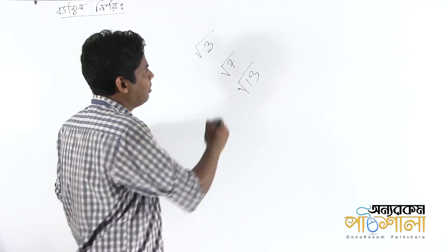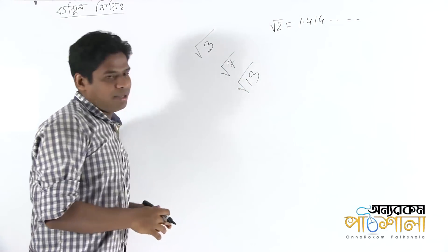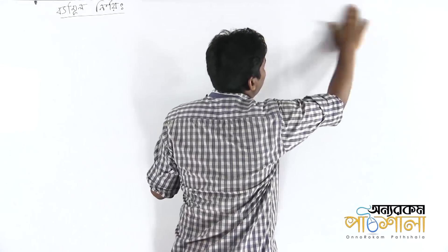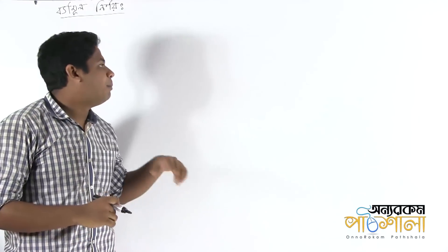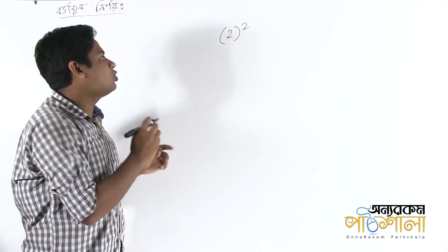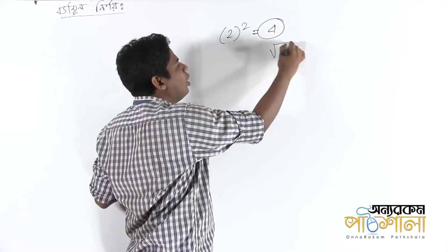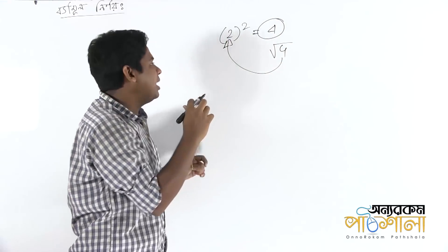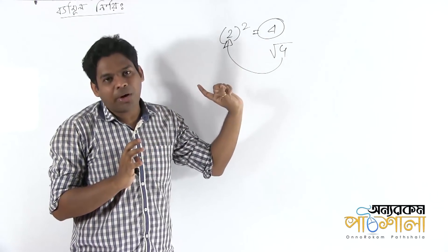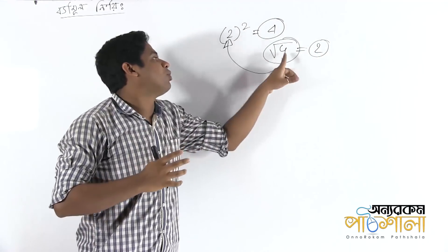You can say that the root of 2 is equal to 1.414. If you have root of 4, you can see that the root is equal to 2. If you have root of 9, it is equal to 3. The root of 16 is equal to 4.